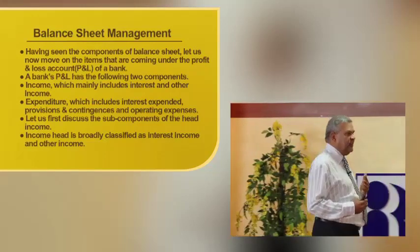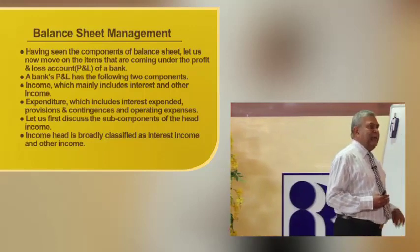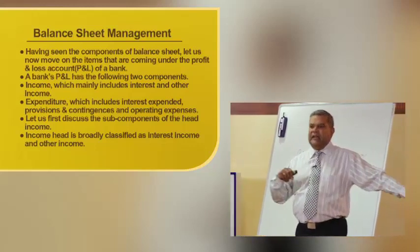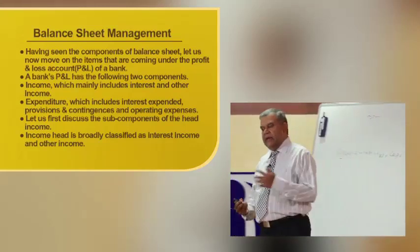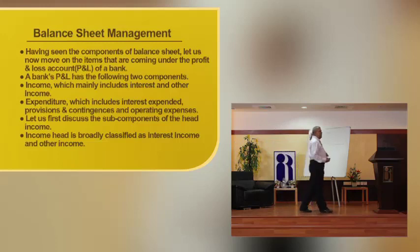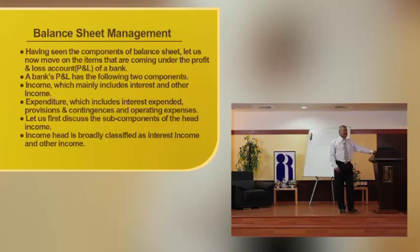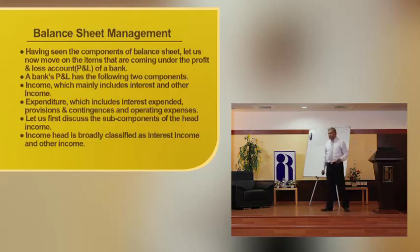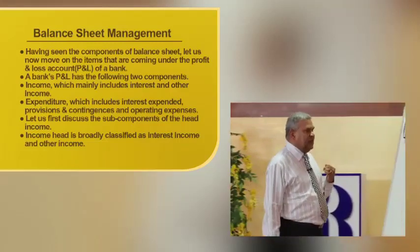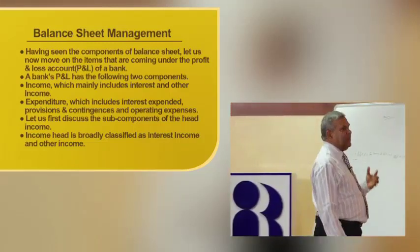A profit and loss account is called a financial account. The bank's financial account has two components: expenditure and income — just like the balance sheet has assets and liabilities. The assets in the P&L become income, and the liabilities become expenditure. The first item is income, which mainly includes interest income and other income. The major chunk of income for the bank comes from advances — they give advances, and from that, interest income comes. That is why it is called interest income from advances.